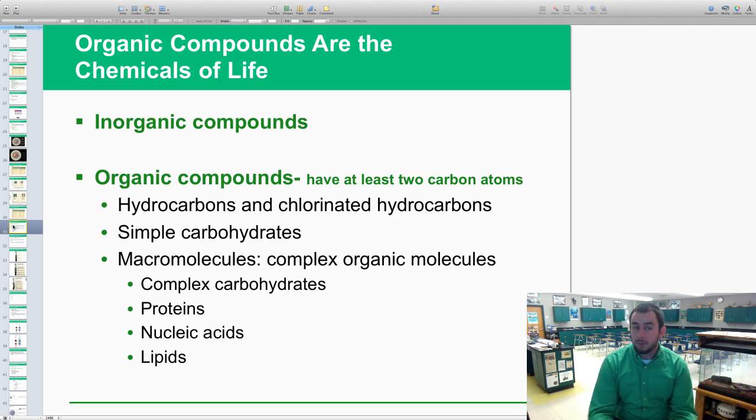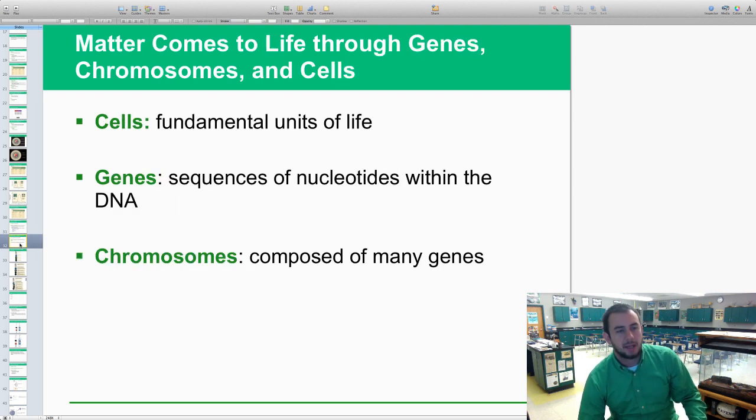Organic compounds are the chemicals of life. We have inorganic compounds and organic compounds. Organic compounds have at least two carbon atoms. Inorganic do not. That's basically the gist of it. If they have two or more carbon atoms, it's organic: hydrocarbons, chlorinated hydrocarbons, simple carbohydrates, all the macromolecules you guys learned way back in biology—carbohydrates, proteins, nucleic acids, lipids—all of those are major organic compounds. Just a refresher on what organic versus inorganic means.